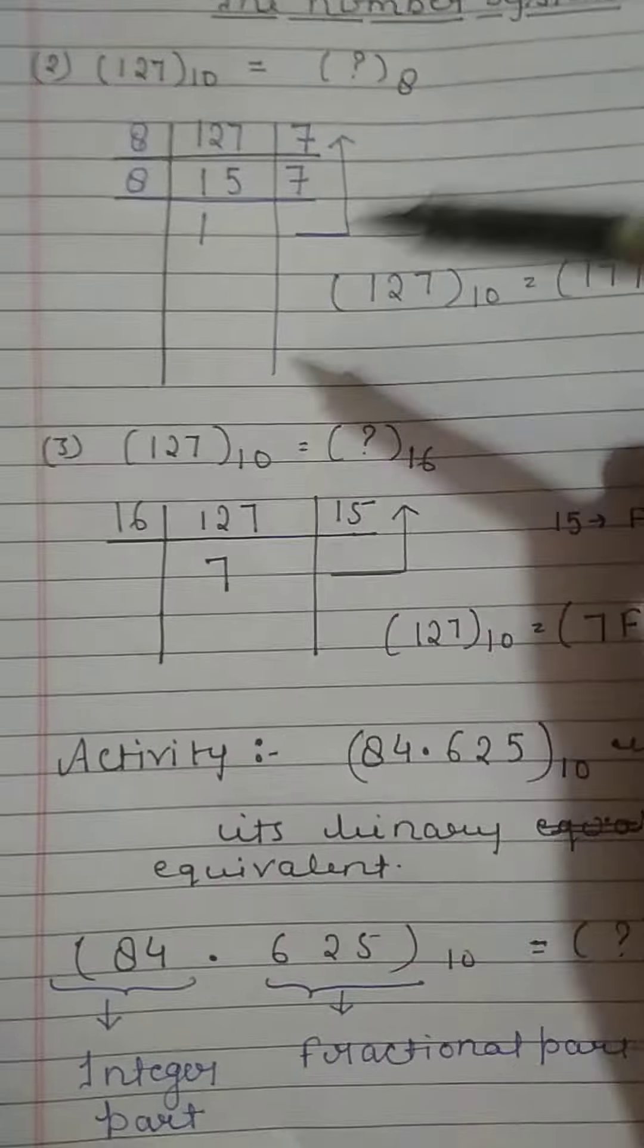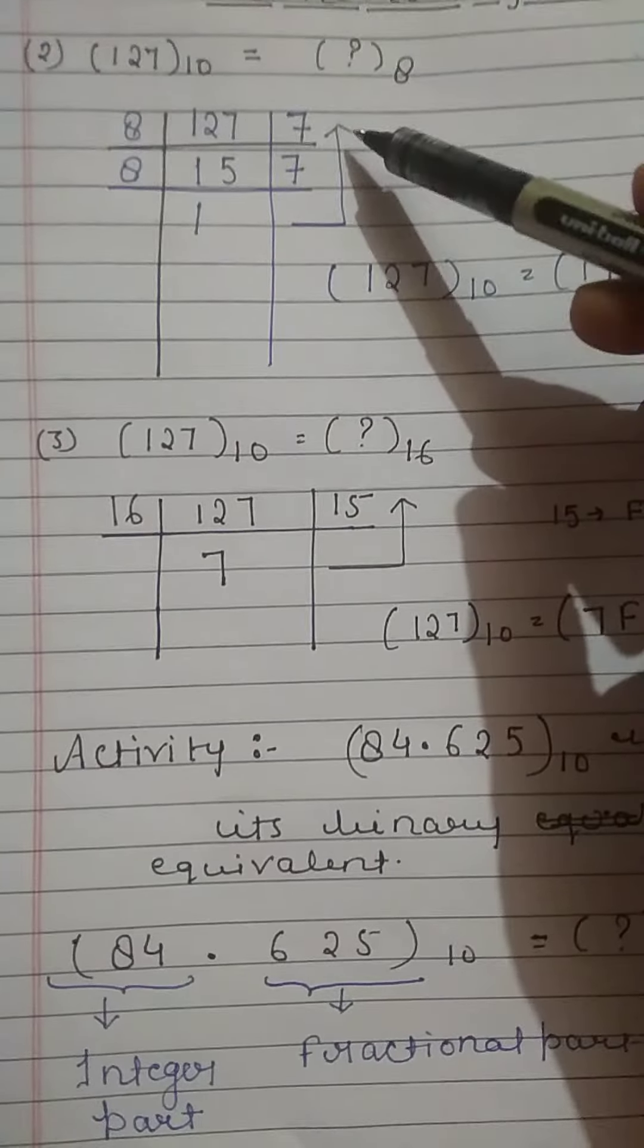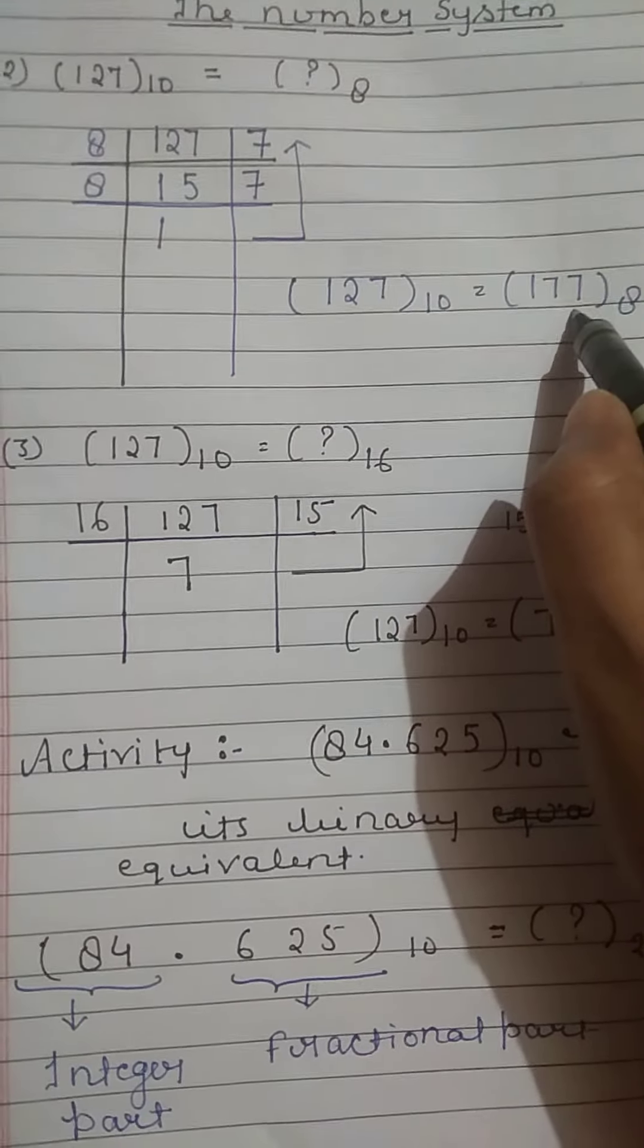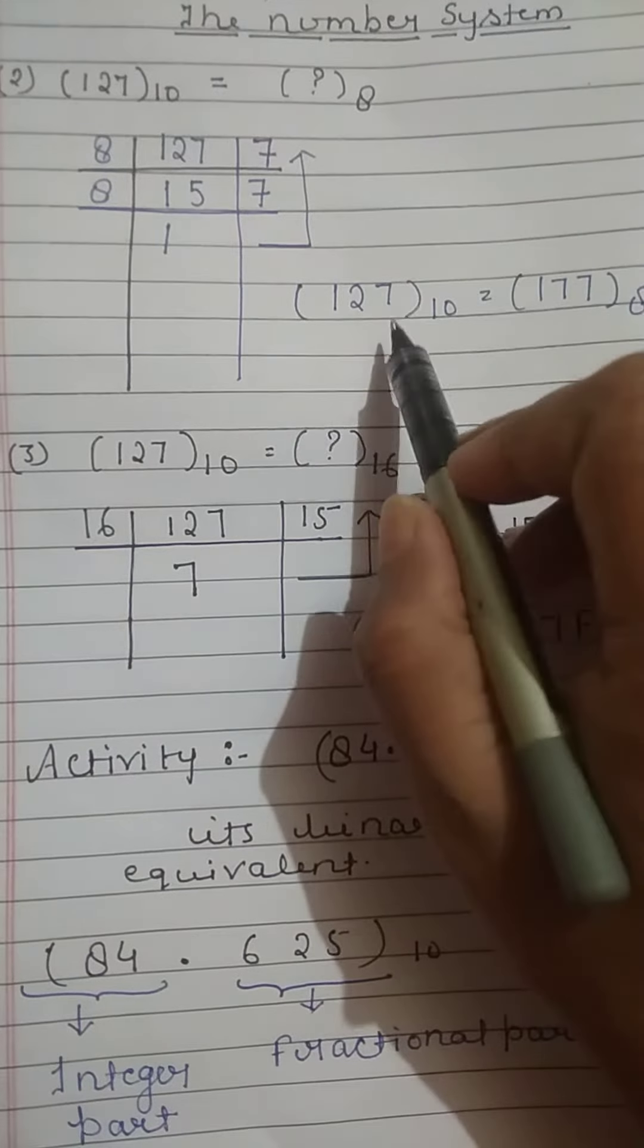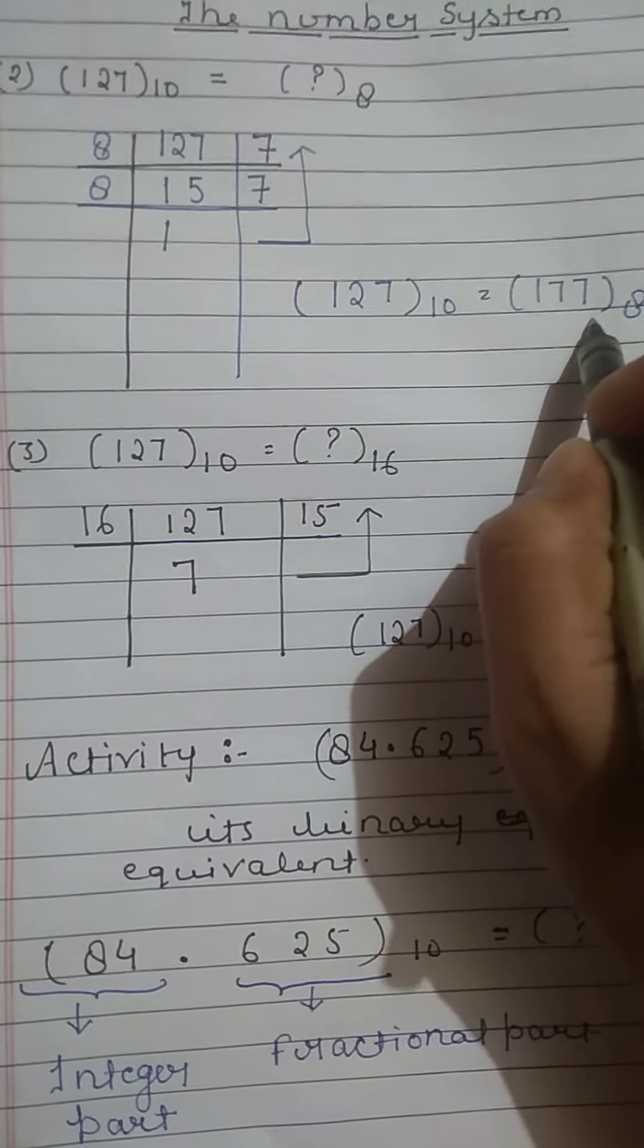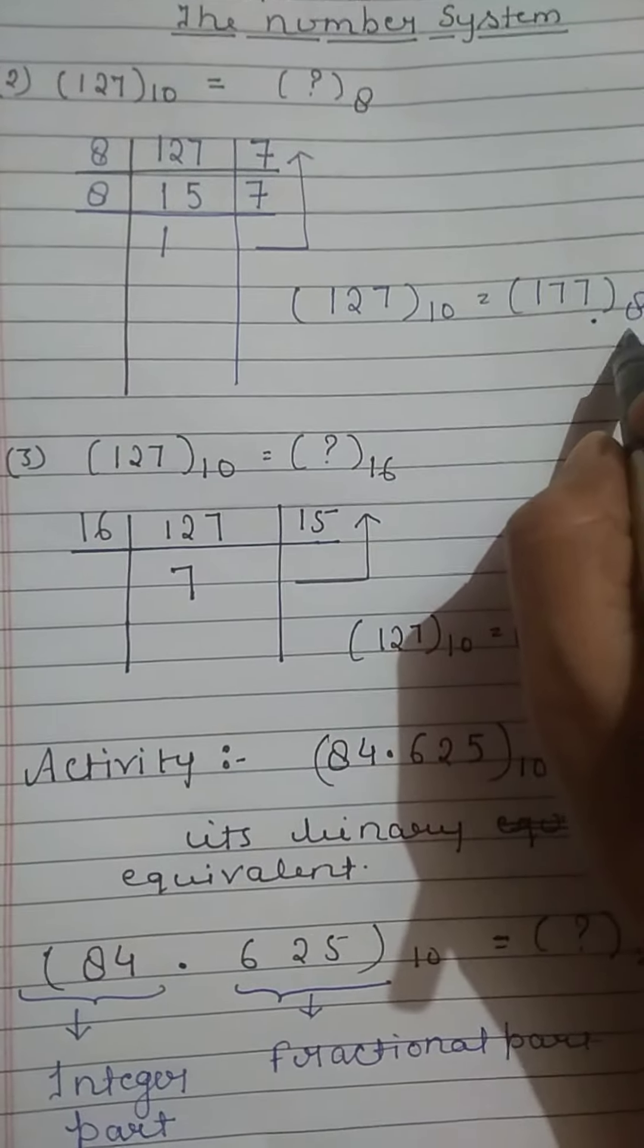From downward to upward we will write the digits. So we get 177. This means 127 decimal is equivalent to 177 in octal.